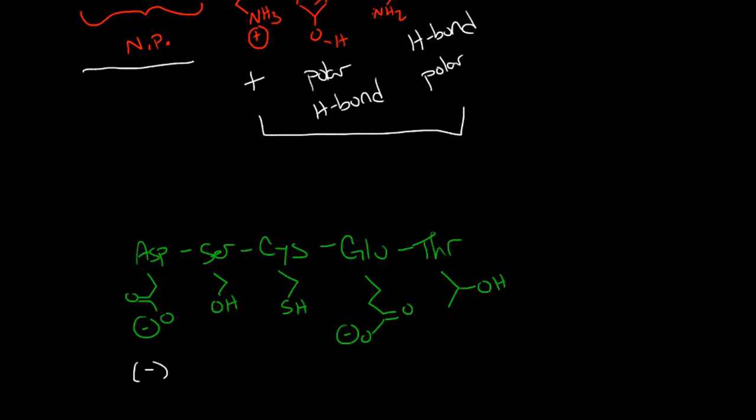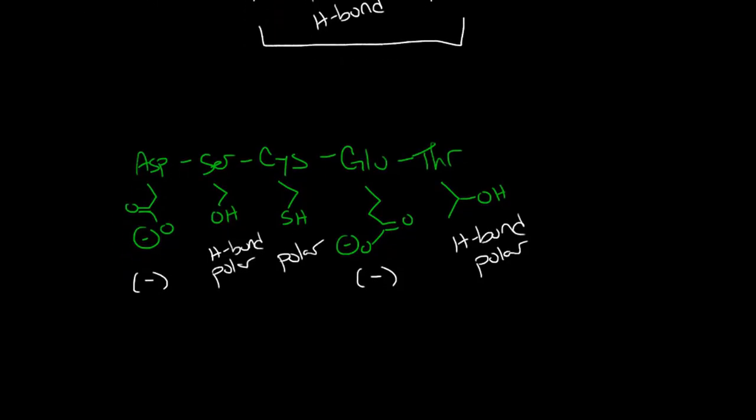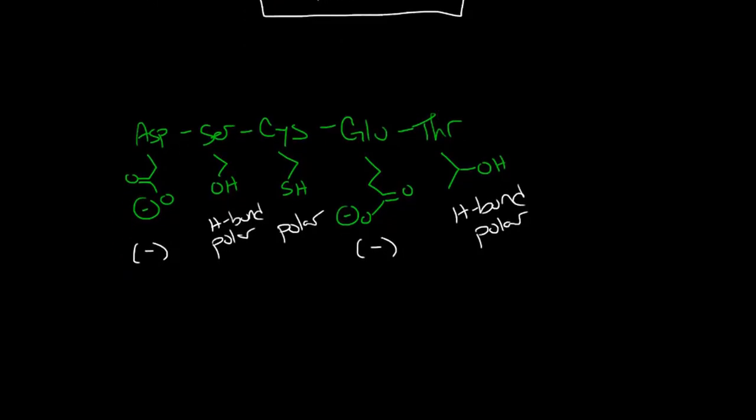Thinking about the functionality here, we have a negative charge from aspartic acid and a negative charge from glutamic acid. Serine is an H bonder and polar. Cysteine is polar but not an H bonder, and threonine is an H bonder and it's also polar. So every single one of the amino acids in this peptide are polar.